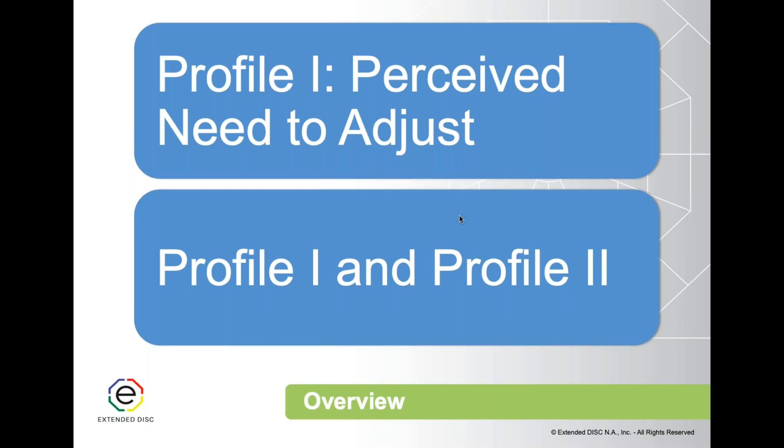Profile 1 is specific to a point in time — specifically when they completed the questionnaire. Our natural style, Profile 2, remains stable; we really don't expect that to change a lot. But Profile 1 we do expect to change as people retake the questionnaire over time.